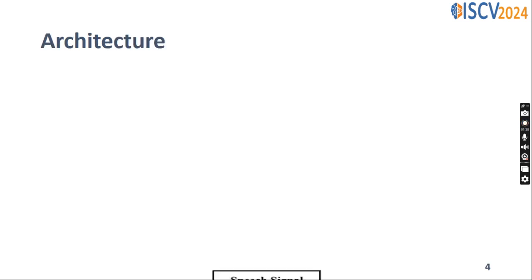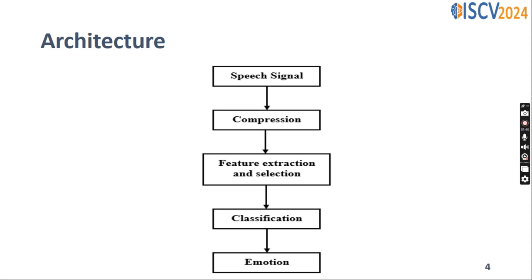Our speech-emotional recognition system goes through three steps: the compression step to improve the algorithm speed, then a step to extract the important features by removing redundant information, and finally the type of emotion will be decided in the classification step. This is shown in the following figure.